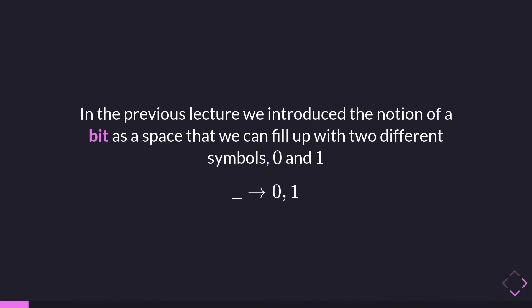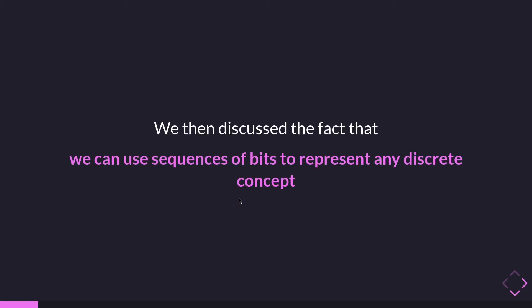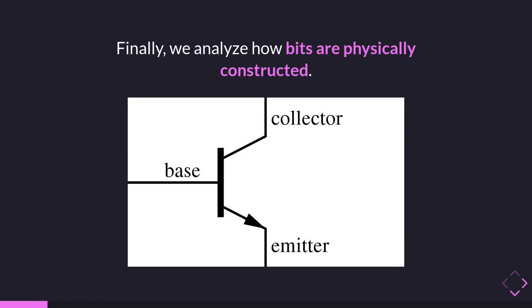Let's start with a brief review. In the previous lectures we discussed that bits can be filled up with two symbols — either zero or one. We use those symbols but we could use any sort of symbol; the idea is that a bit is just a space we can fill with two different values. We can use sequences of bits to represent any discrete concept, and physically bits are implemented through transistors, which are electrical switches.